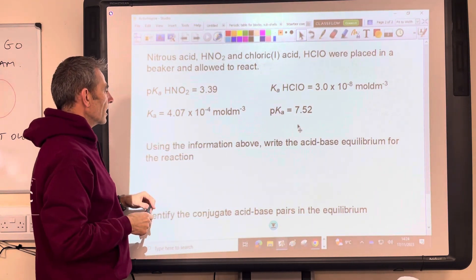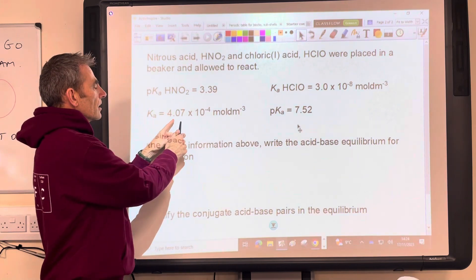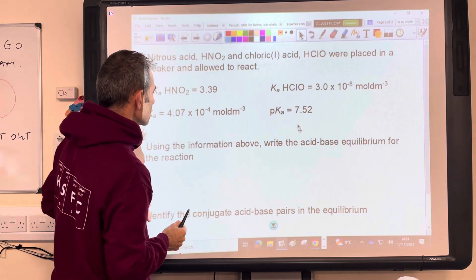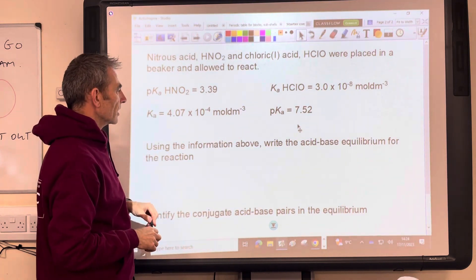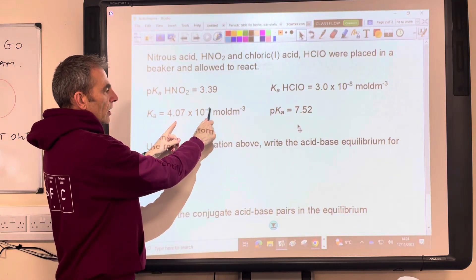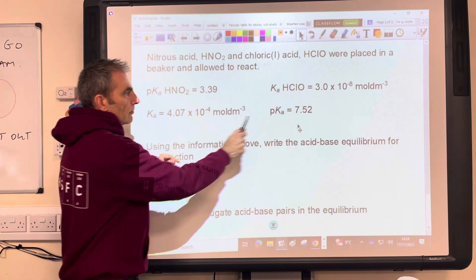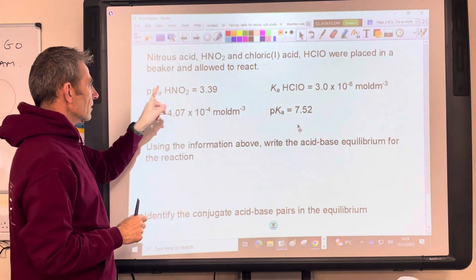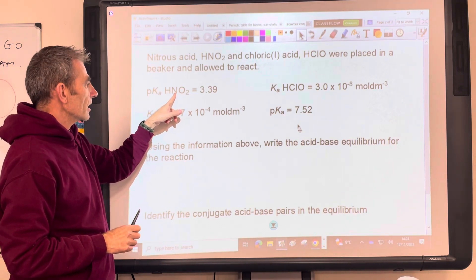If we're basing it on the Ka values, the higher the Ka, the more dissociated it is and therefore the stronger the weak acid. So that's a lower negative power, so that's a bigger number than that one. Anyway, whichever way you do it, that's the stronger acid, HNO2.